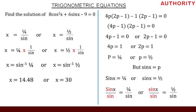We have finally solved the trigonometric equation 8cos²x + 6sinx − 9 = 0. The values of x are 14.48° or 30°. If you have any questions, please drop them in my email. We'll continue teaching more on trigonometric equations until you master it. Thank you very much, see you next time.